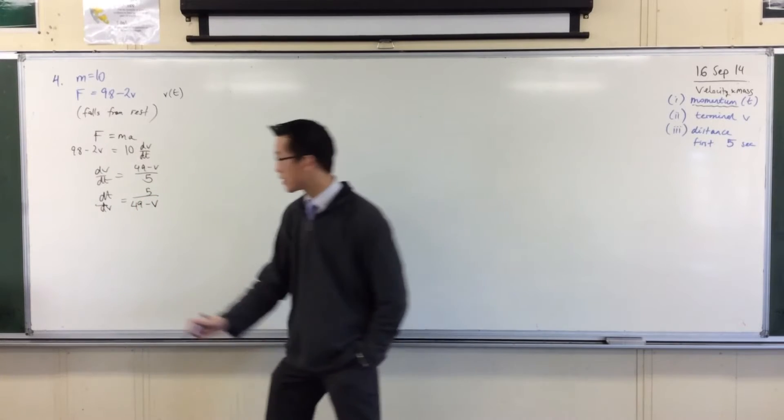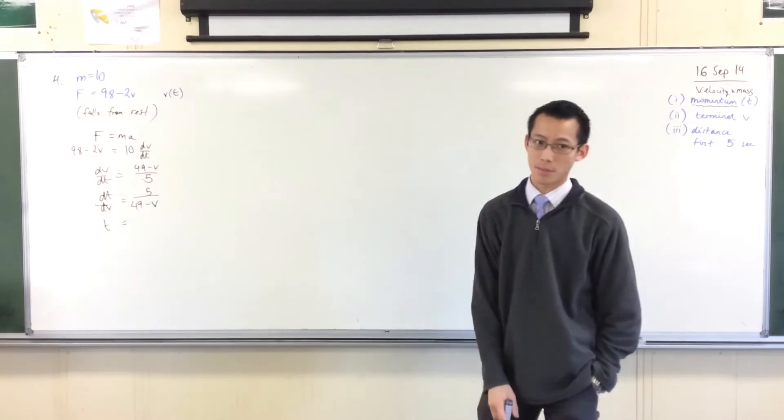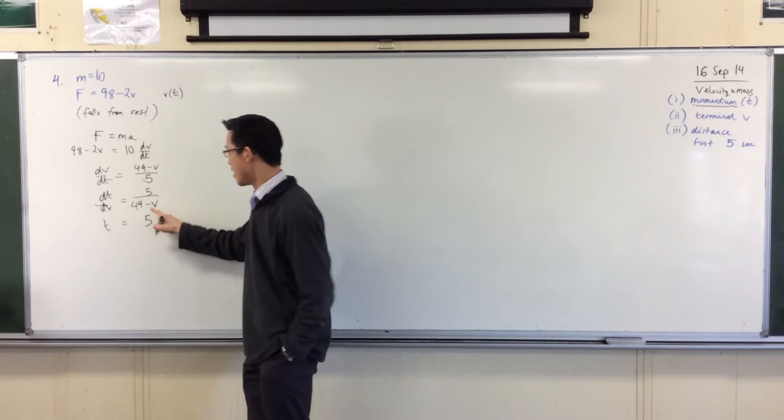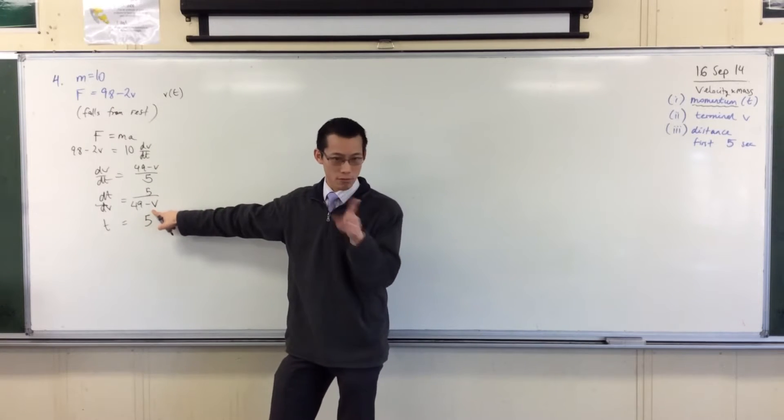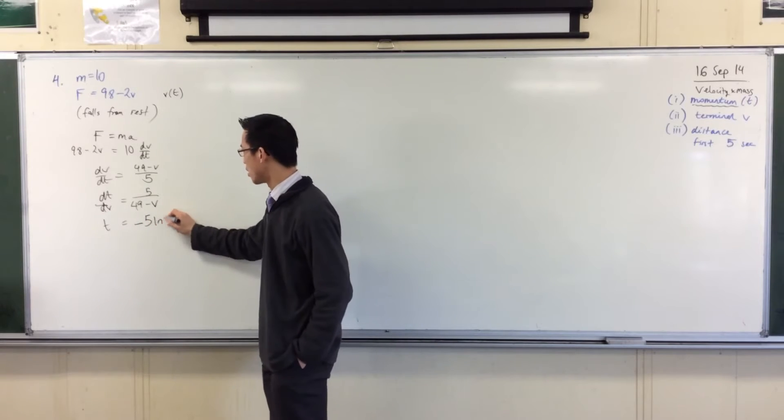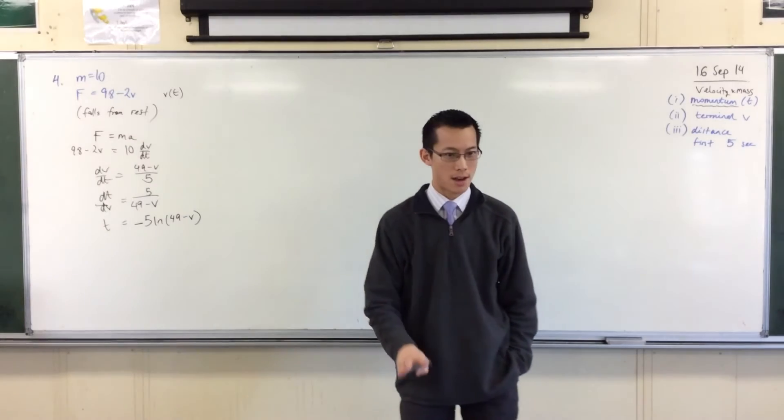So now you integrate, you integrate, you get t on this side, and what do you get on the right-hand side? v's on the bottom. So you get, there's an extra factor of 5, right? The inside function, the reverse chain rule is negative 1, negative. And then you get your log, right? Like so.